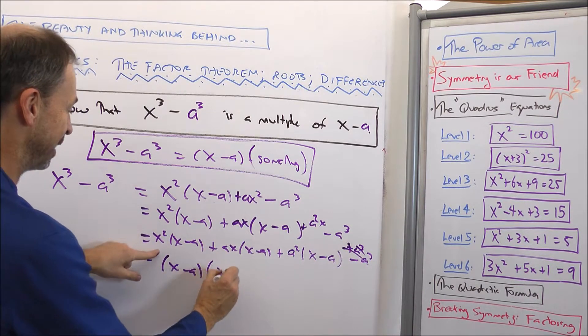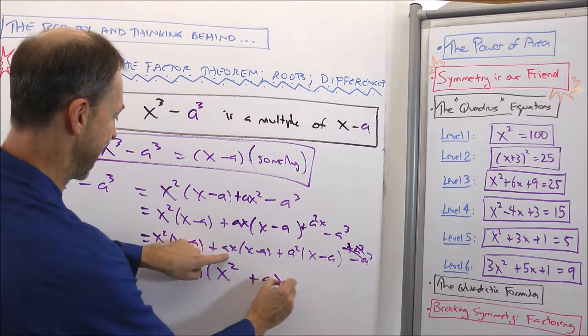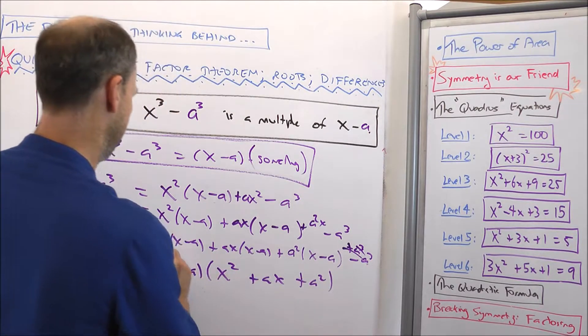In fact, it's this. It's (x minus a) times (x² + ax + a²). Bingo.